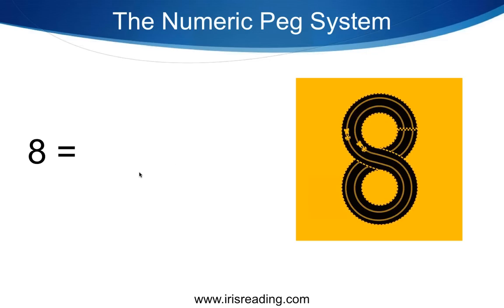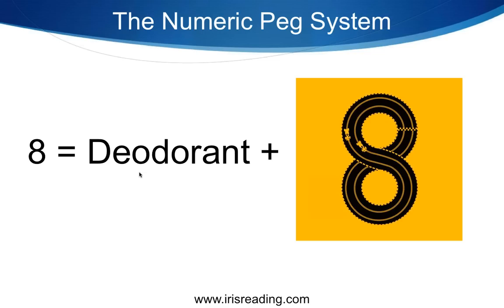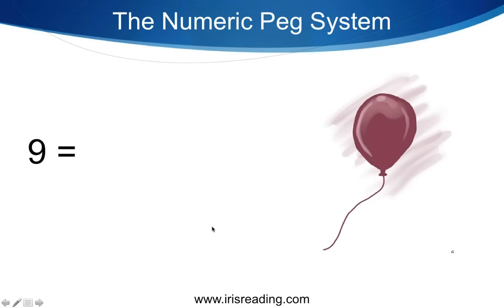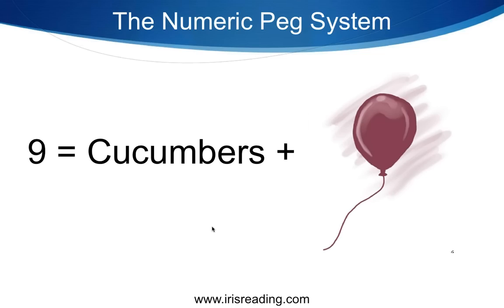Number eight is a racetrack, and we have to remember deodorant. Imagine race cars going around the track, but instead of regular race cars, they're giant deodorant sticks with wheels on them — like Speed Stick brand deodorant-shaped cars racing around the racetrack.